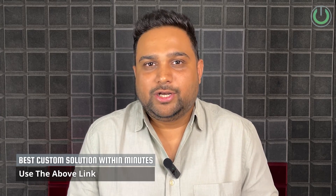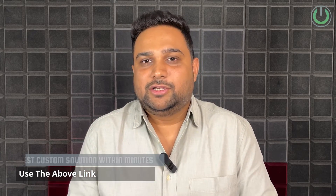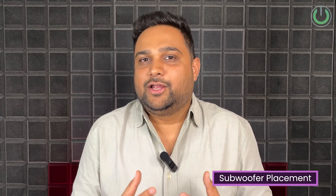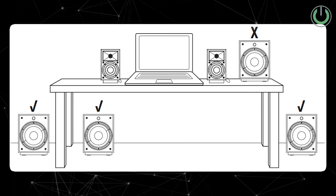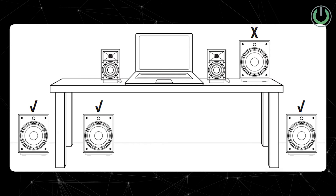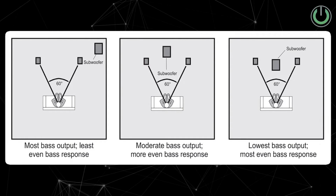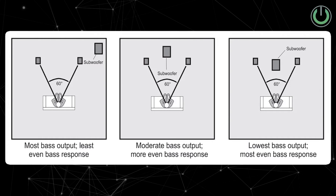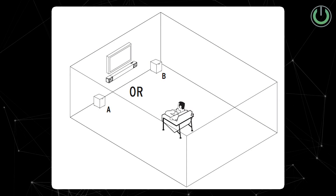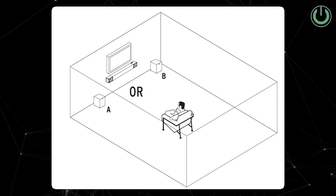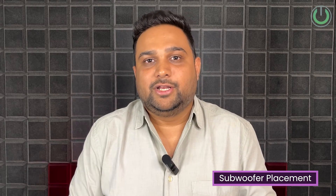Now let's understand the physical elements important in selecting a subwoofer. The first is placement — you need to understand where exactly you are going to place the subwoofer. Is it going to be on the floor, next to your chair, behind the screen, or in the ceiling? For floor options, most of the time you will use an active subwoofer, but if it is a passive subwoofer, you can also put it behind the screen or above in the ceiling.